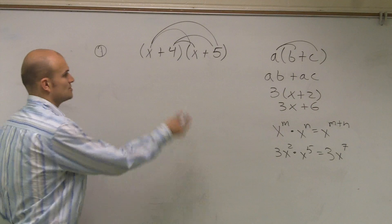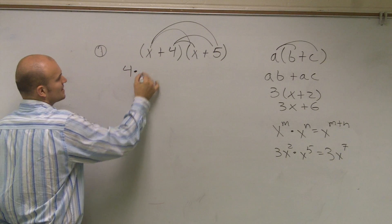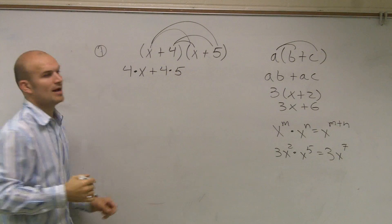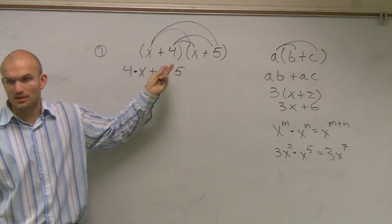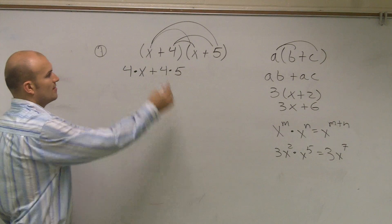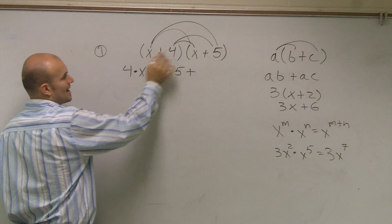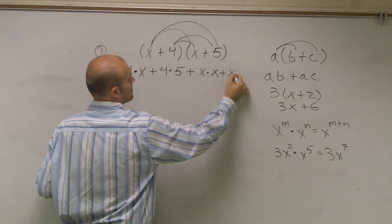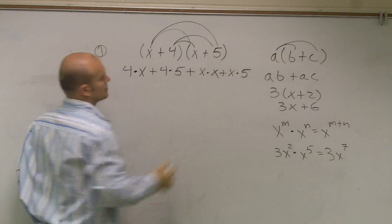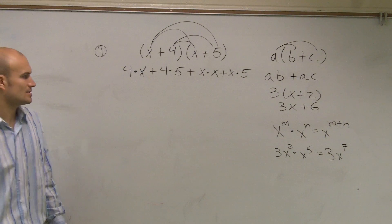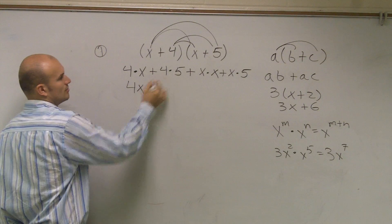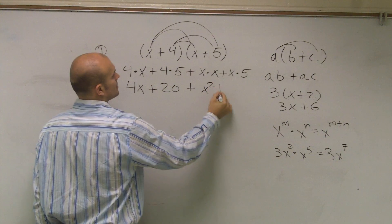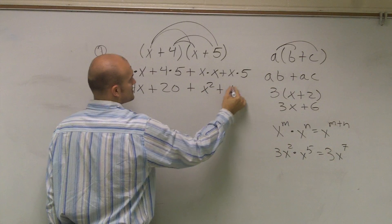Let's just work it out. 4 times x, then plus 4 times 5 — I'm saying plus because that's a positive 4. Then I do the next one: x times x plus x times 5. So that gives us 4x plus 20 plus x squared plus 5x.